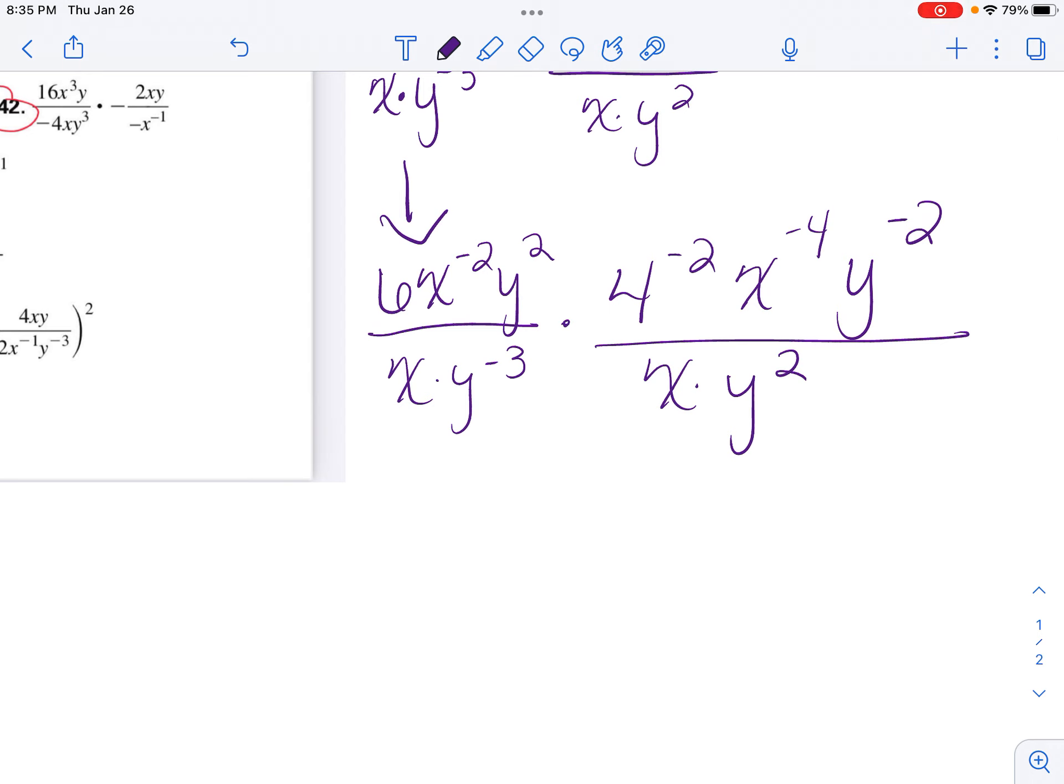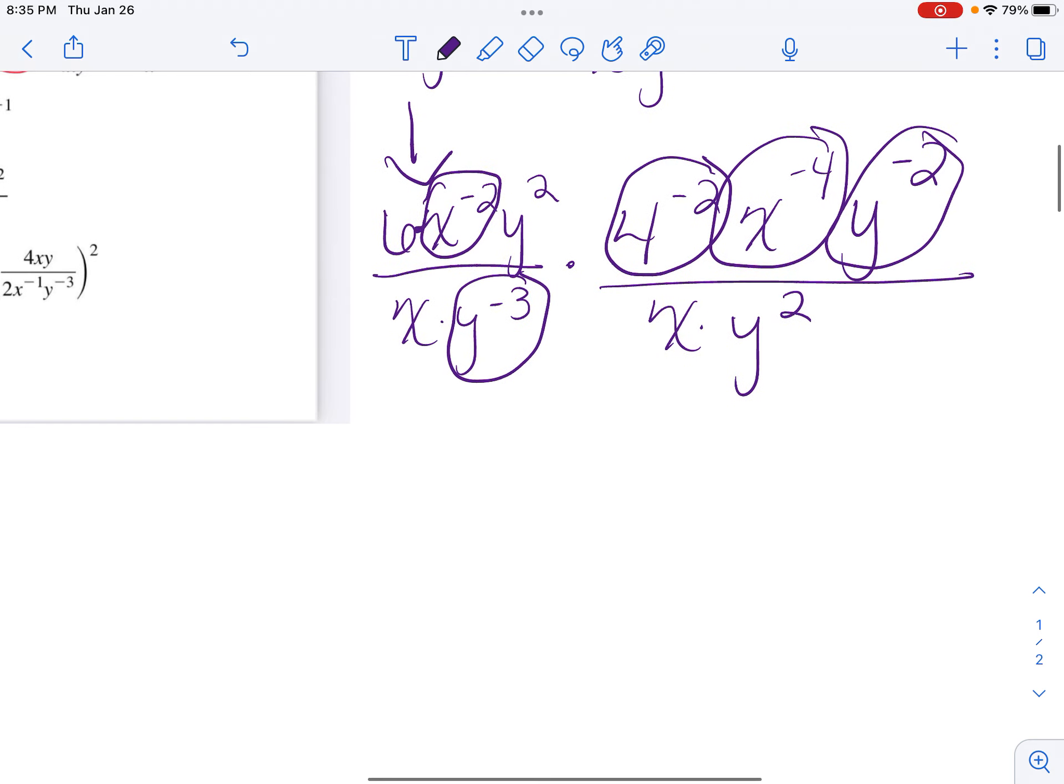Now I'm going to circle so these are separate. So I'm going to circle my negatives. So my negatives have to go to the inverse.